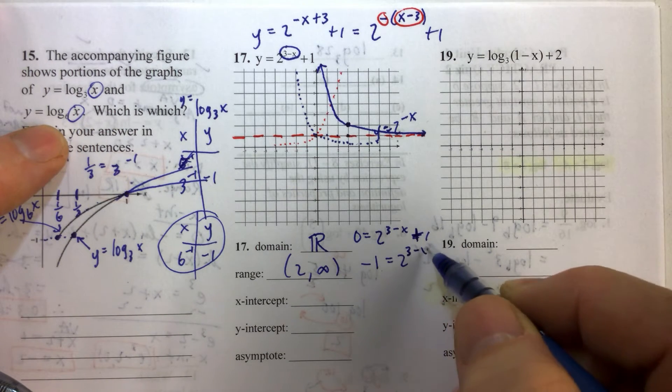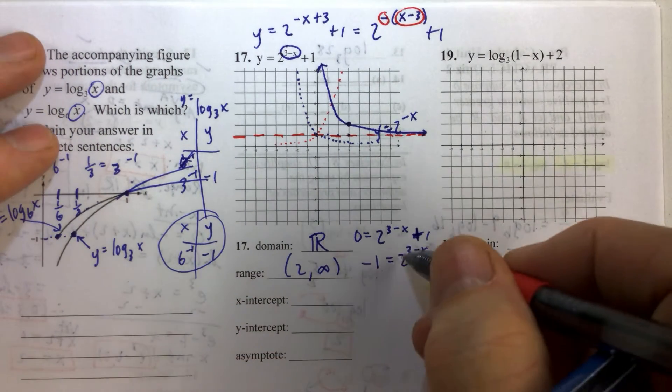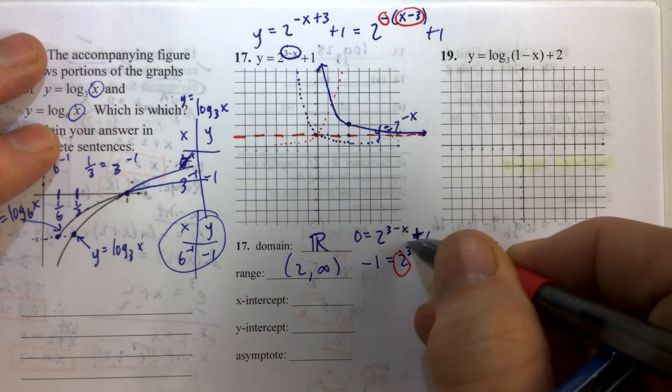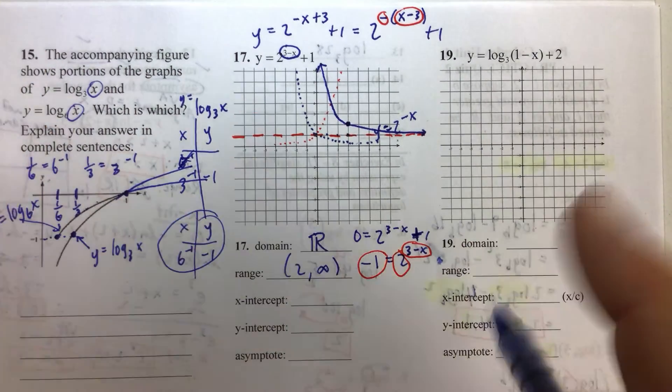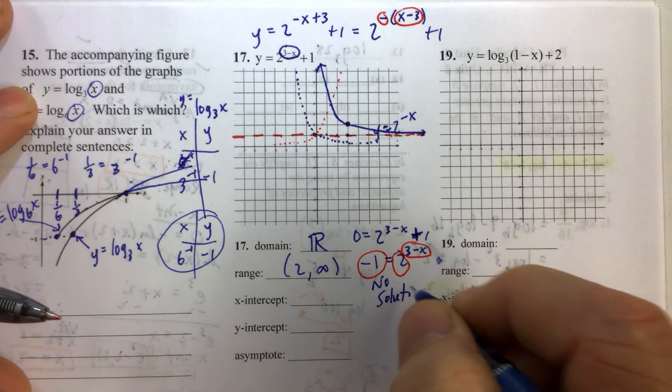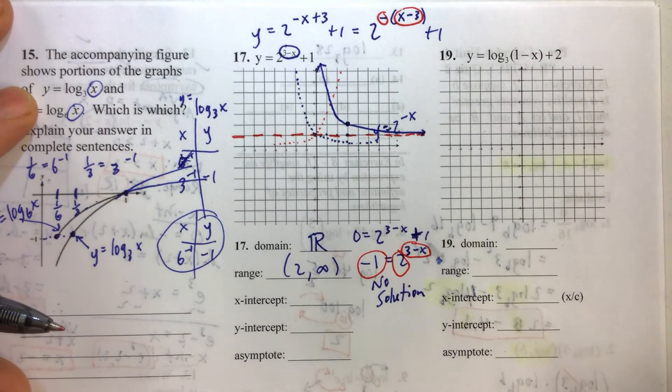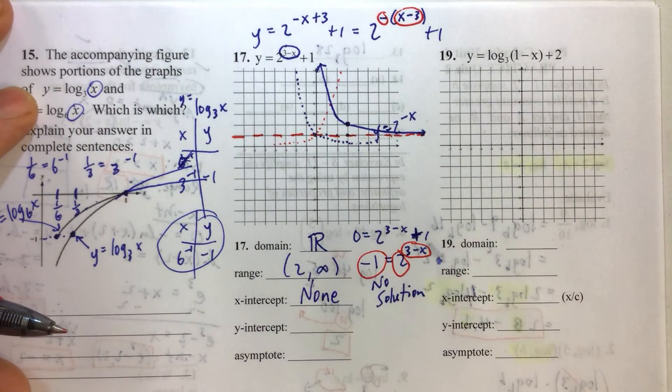Any time you raise a positive number to any exponent, it can never be negative. So this equation has no solution. But we were hoping that trying to find an x-intercept would yield no solution because our graph doesn't show that it actually goes through the x-axis. So that's consistent with our graph.